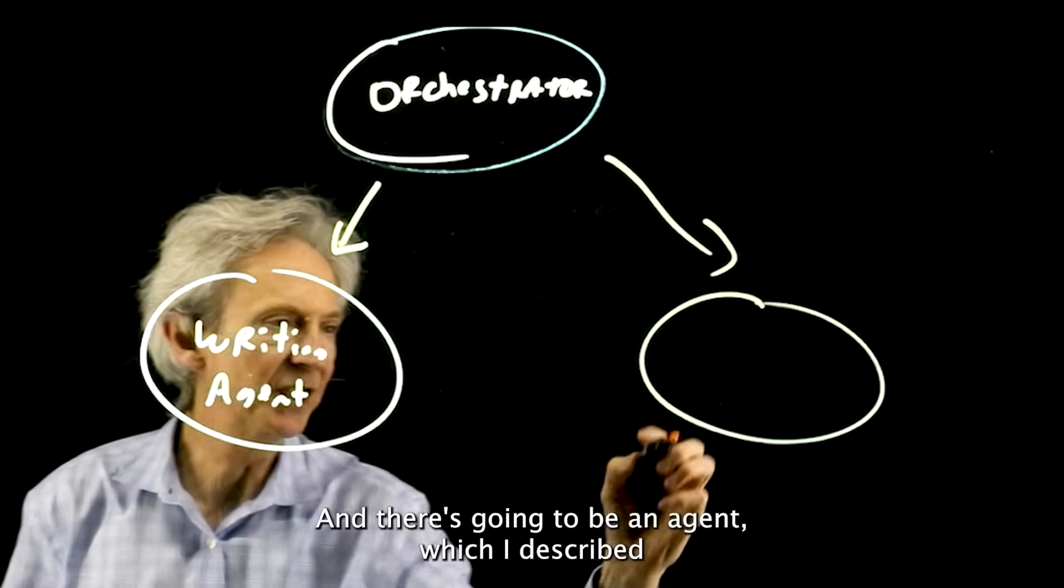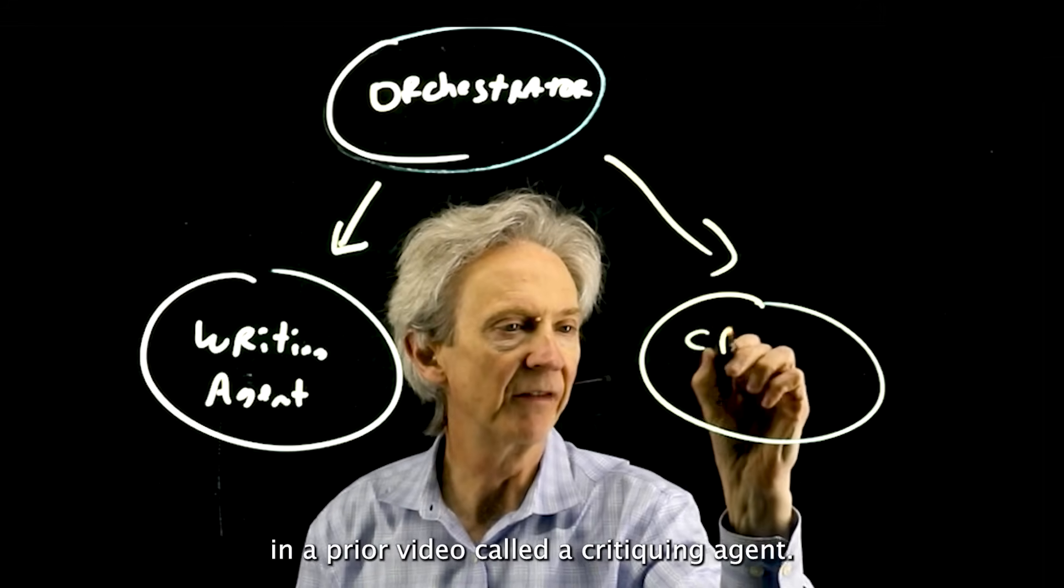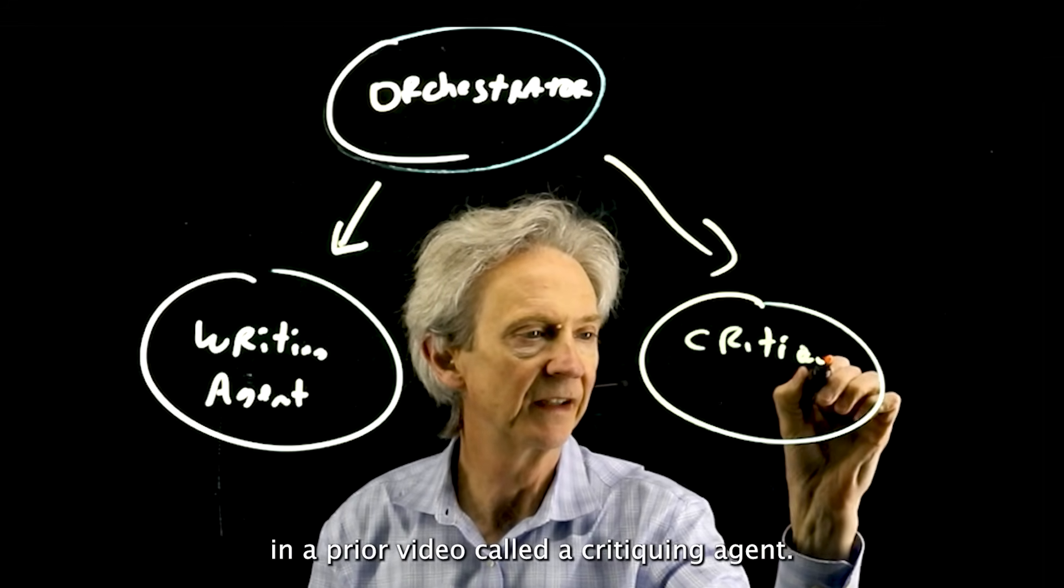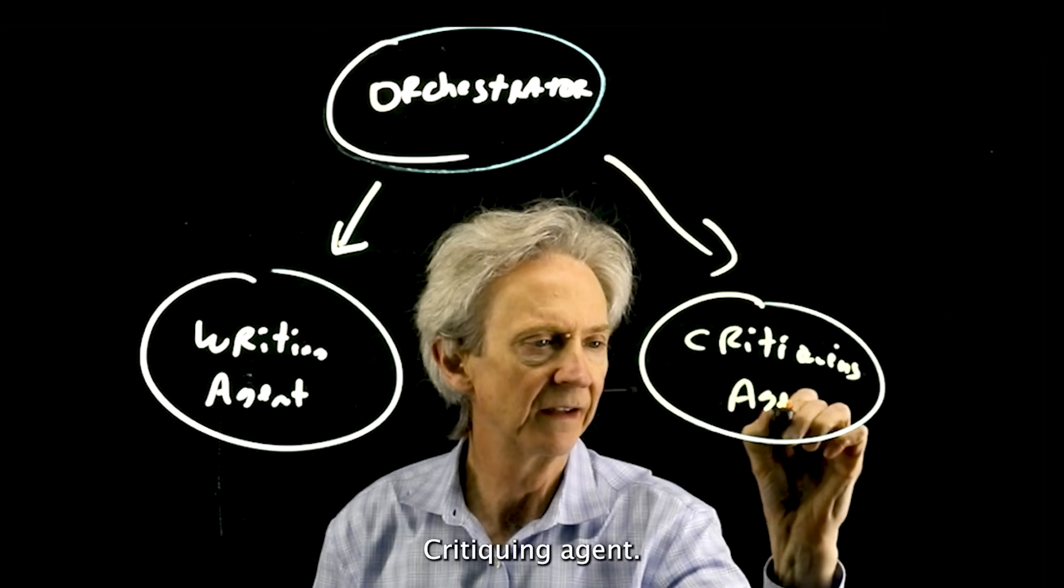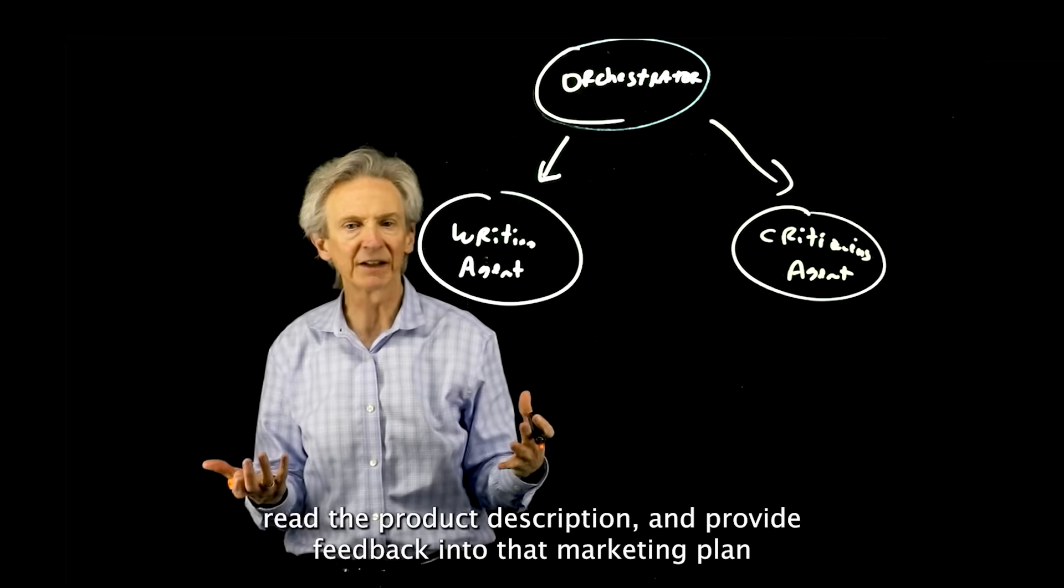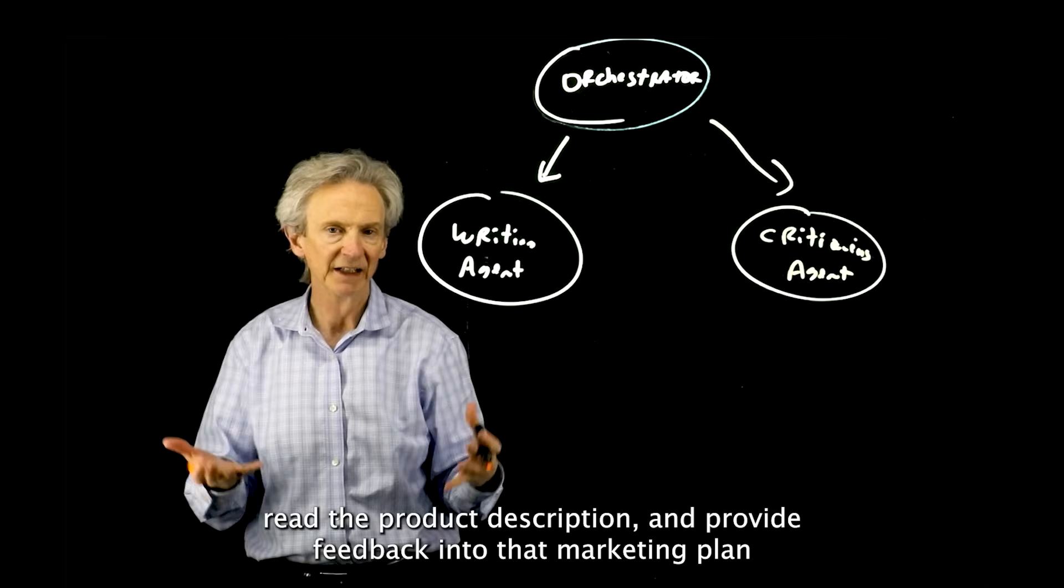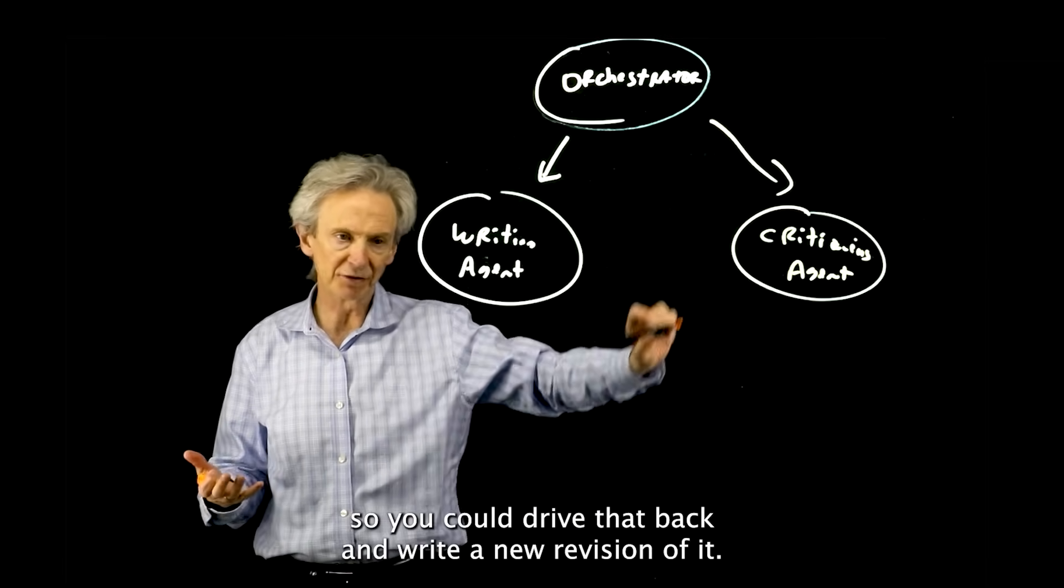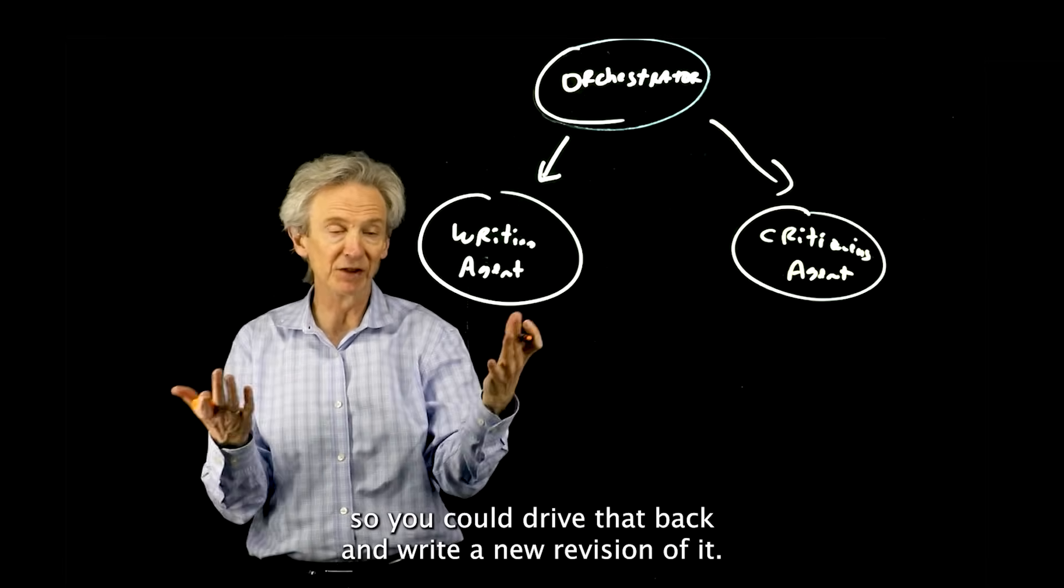There's going to be an agent, which I described in a prior video, called a critiquing agent. This agent will read the marketing plan, read the product description, and provide feedback into that marketing plan so you could drive that back and write a new revision of it.